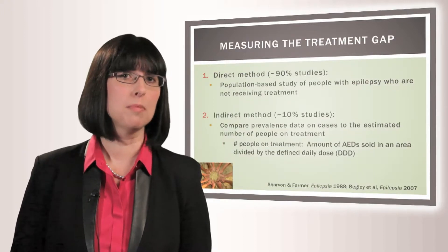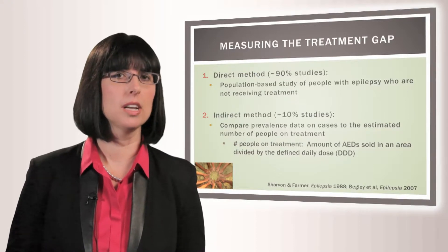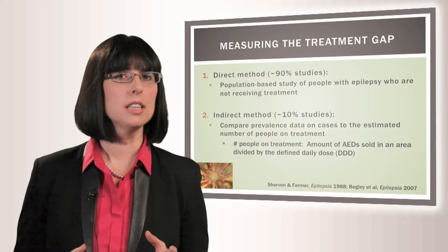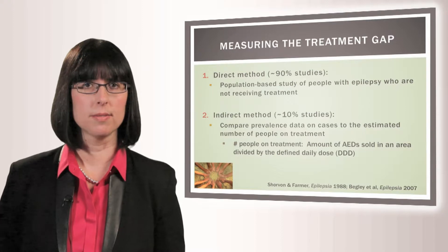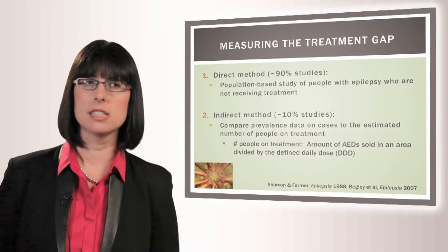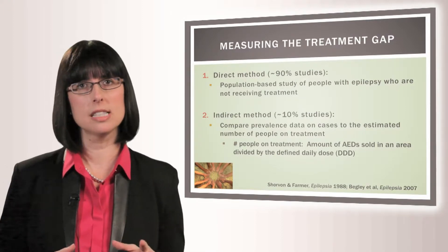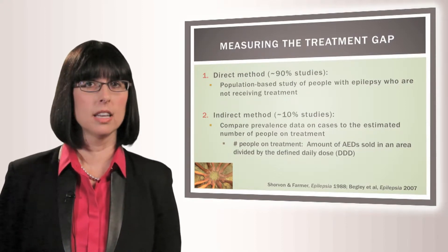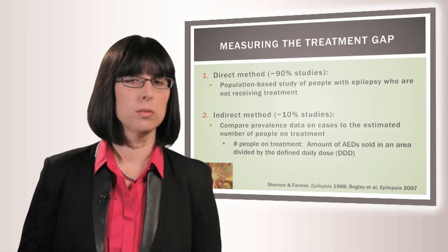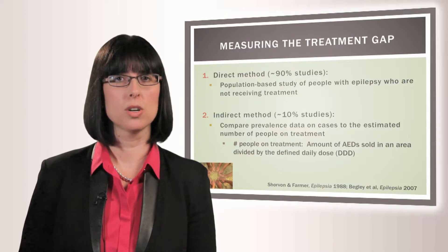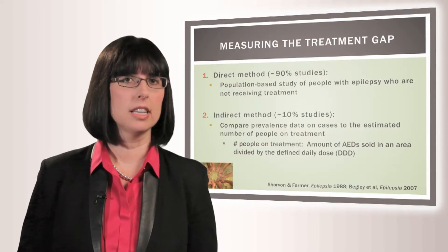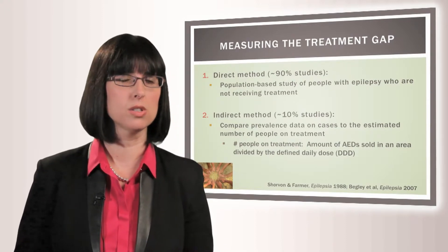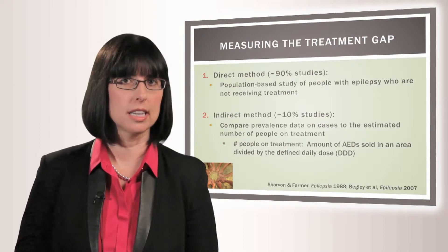The treatment gap is usually measured using the direct method, where you identify a population-based sample of people with epilepsy and then directly determine the proportion who are not receiving treatment. The indirect method is much less commonly used, and it compares prevalence data on cases to the estimated number of people on treatment — typically calculated as the number of anti-epileptic drugs sold in an area divided by the defined daily dose, which is the assumed average maintenance dose per day for an anti-epileptic drug in an adult.